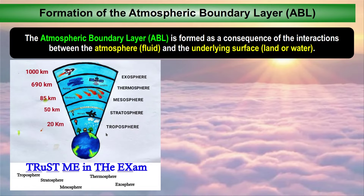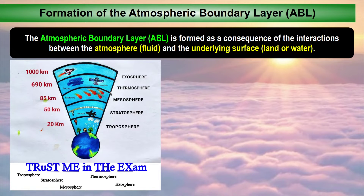The atmospheric boundary layer is just a part of the atmosphere. If you study complete atmospheric science, the atmosphere has 5 different layers. At the bottom-most is the troposphere, just above that the stratosphere, further above the mesosphere, then the thermosphere, and then the exosphere. A simple trick to remember this sequence: 'Trust me in the egg sound' — TR for troposphere, ST for stratosphere, ME for mesosphere, TH for thermosphere, and EX for exosphere.